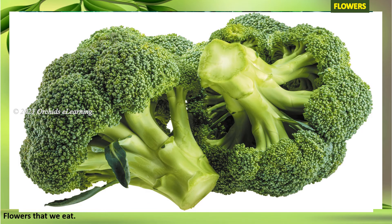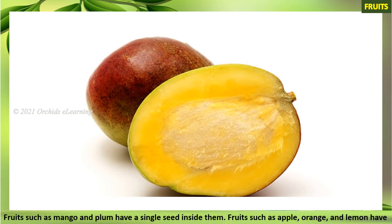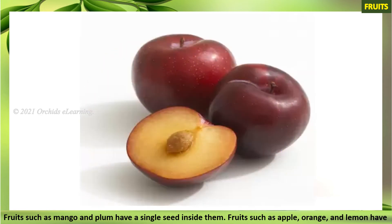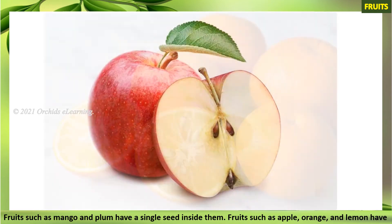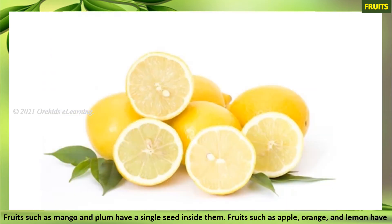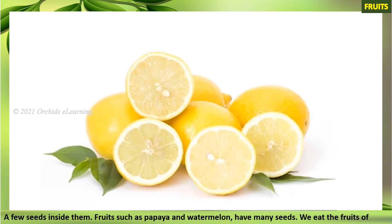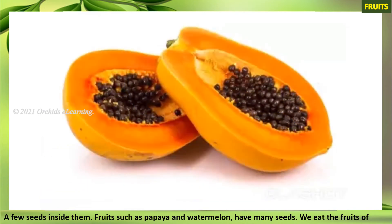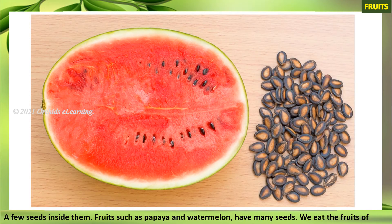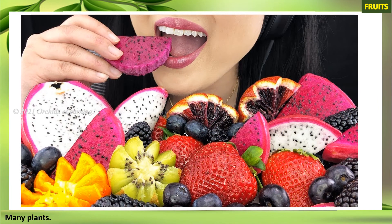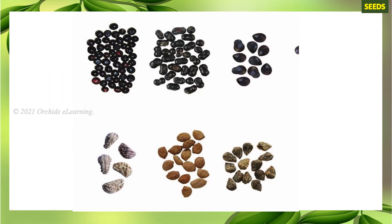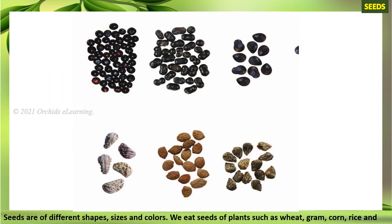Fruits: fruits such as mango and plum have a single seed inside them. Fruits such as apple, orange, and lemon have a few seeds inside them. Fruits such as papaya and watermelon have many seeds. We eat the fruits of many plants.